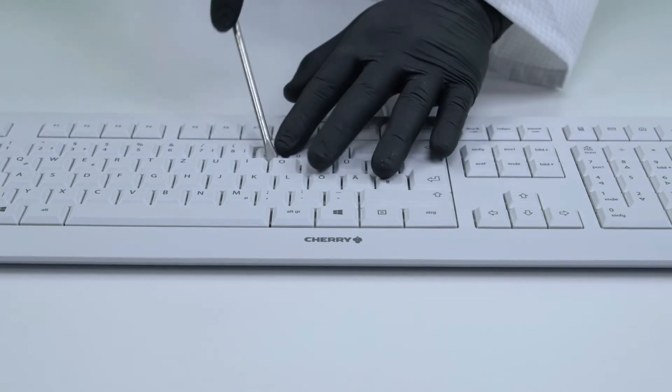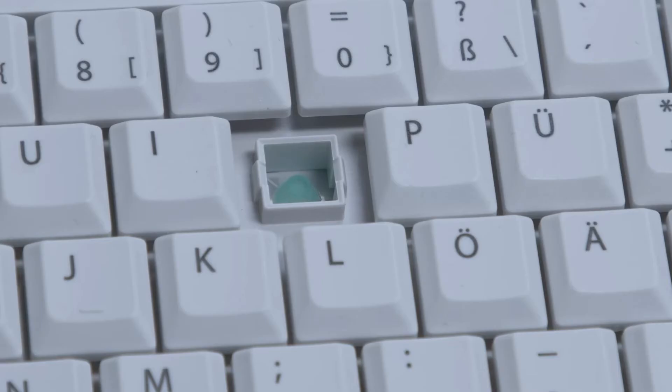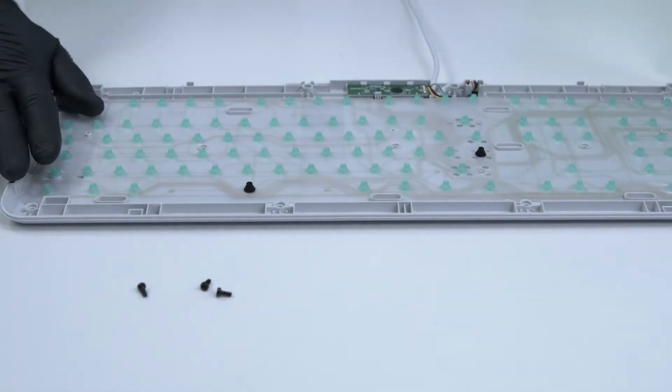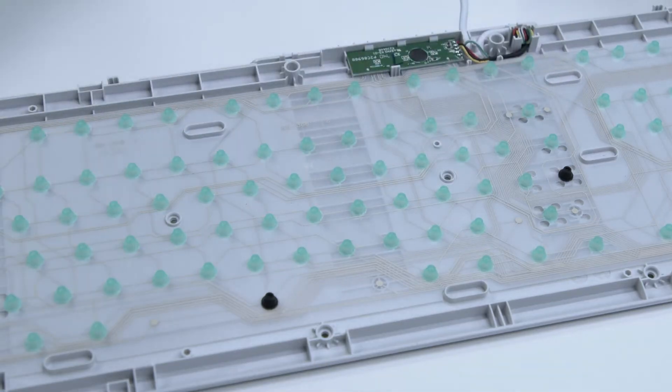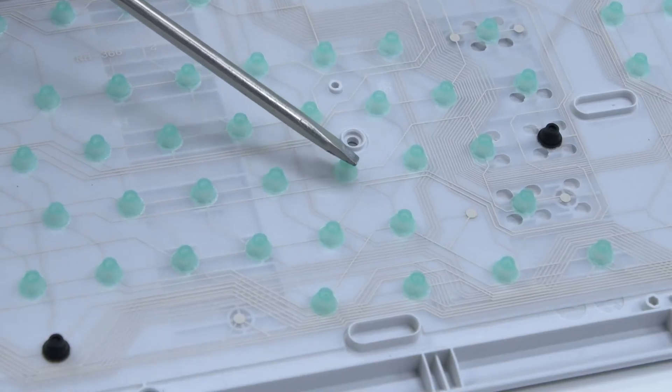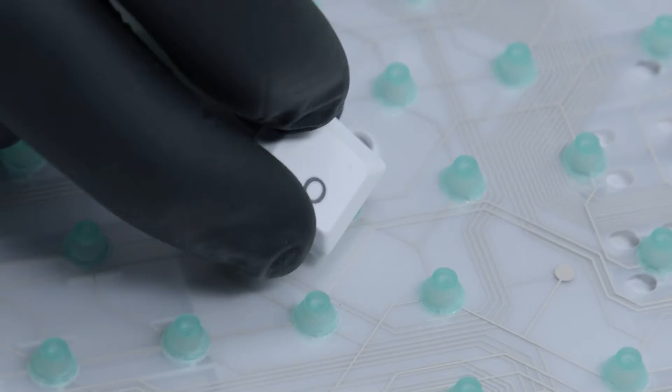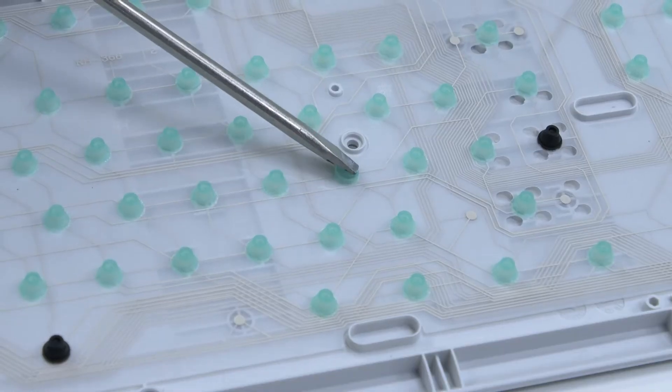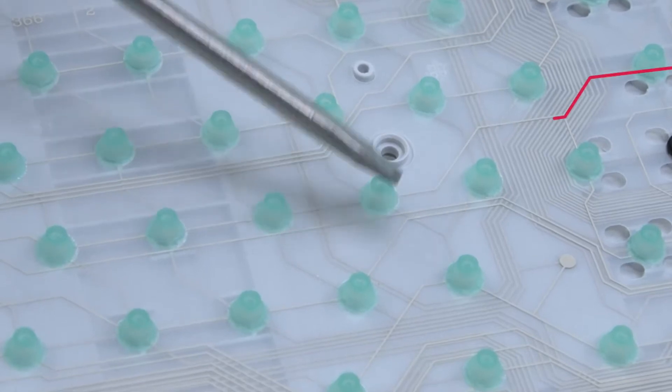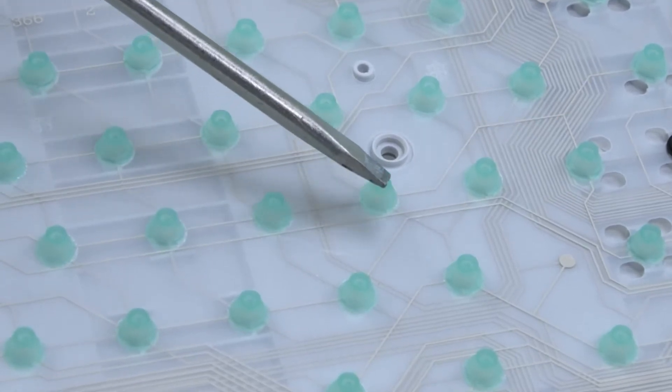In these keyboards, a plastic guide for the keycaps runs directly in the upper part of the case. Underneath is a two-layer switching foil with specially shaped domes made of silicone rubber. When the key is pressed, the rubber dome is pressed onto the switching foil, which closes its contacts. The signal is then transmitted to the actual electronics via the conducting paths.